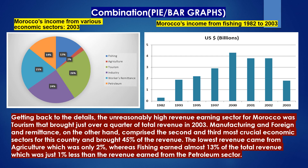Getting back to the details, the reasonably high revenue earnings sector for Morocco was tourism, which brought just over a quarter of total revenue in 2003. Manufacturing and foreign remittance, on the other hand, comprised the second and third most crucial economic sectors for this country and brought 45 percent of the revenue. The lowest revenue came from agriculture, which was only two percent, whereas fishing earned almost 13 percent of the total revenue, which was just one percent less than the revenue earned from the petroleum sector.